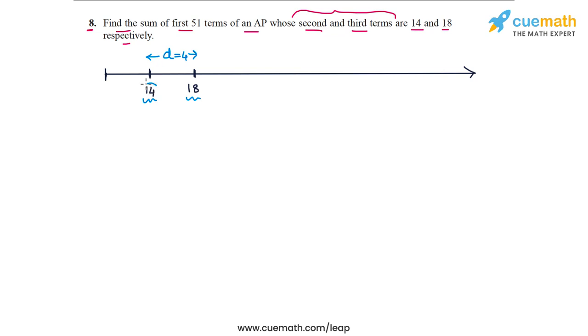If we subtract this value of D from the second term, we will get the first term A which is equal to 10. So just by using the fact that the second and third terms are 14 and 18, we can find D equals 4 and A equals 10. Now the AP is fully determined because we have the first term and the common difference.